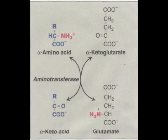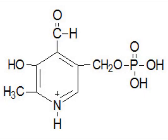Transaminations involve moving an alpha-amino group from a donor alpha-amino acid to the keto carbon of an acceptor alpha-keto acid. These reversible reactions are catalyzed by a group of intracellular enzymes known as aminotransferases, which generally employ covalently bound pyridoxyl phosphate as a cofactor.